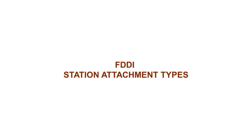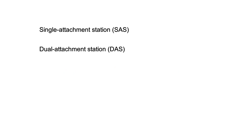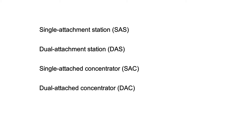FDDI defines four types of devices: Single Attachment Station, Dual Attachment Station, Single Attached Concentrator, and Dual Attached Concentrator. A SAS attaches to only one ring through a concentrator. One of the primary advantages of connecting devices with SAS attachments is that the devices will not have any effect on the FDDI ring if they are disconnected or powered off.